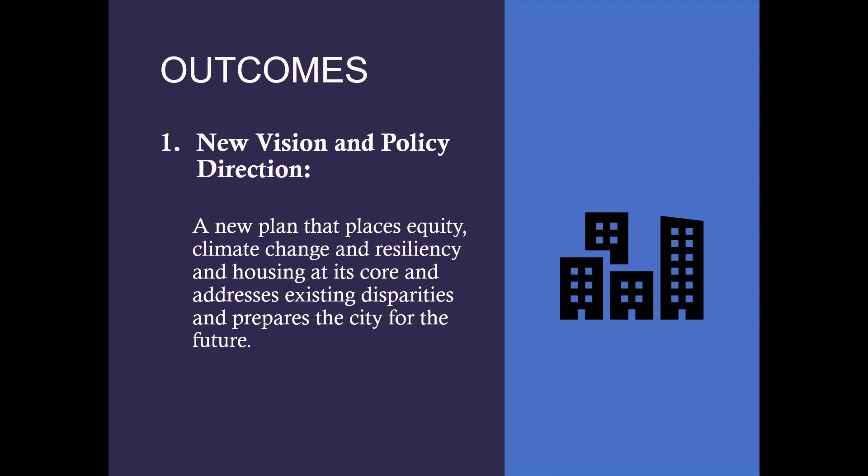The first desired outcome is a new plan that places equity, climate change, and resiliency in housing at its core, addressing existing disparities and preparing the city for the future. The city council recently adopted several zoning code amendments to improve housing choice and supply, but staff saw these as incremental and conservative — aligned with the current plan. A new vision is needed to further address ongoing housing issues and strategic plan actions such as missing middle housing, minimum density requirements, and streamlined approvals.